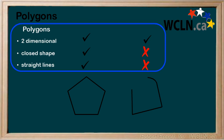As we can see, the first shape is actually a polygon as it is two-dimensional, a closed shape, and is made up of straight lines. The second shape is not a polygon as it has a curved line and an opening.